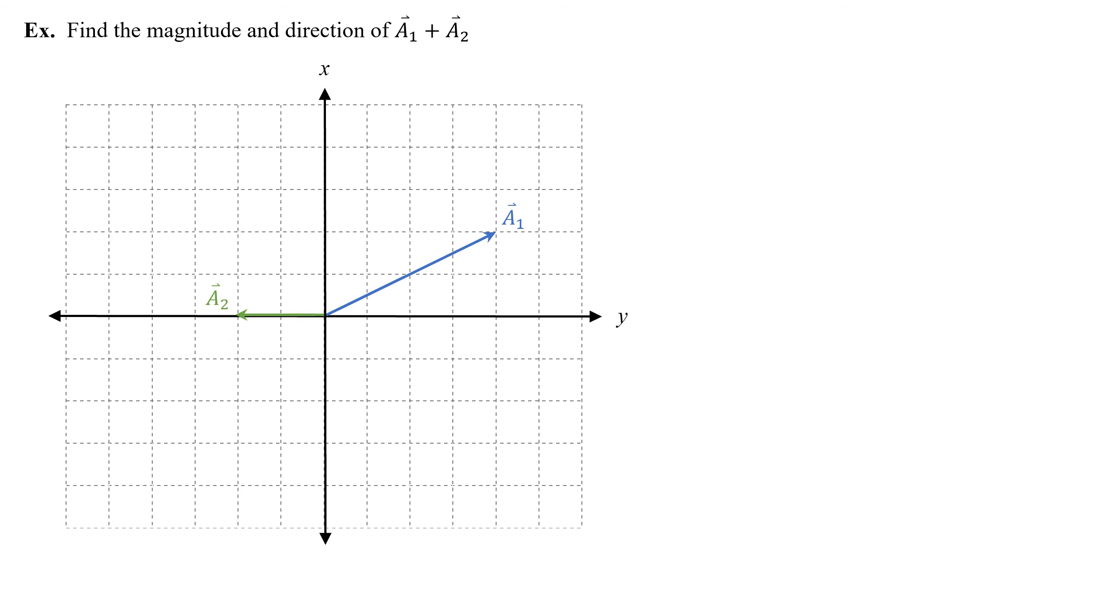Let's do an example. Find the magnitude and direction of a1 plus a2. So since this is nicely drawn on a graph for me, I'm just going to go ahead and do the head-to-tail method. I can take a2, and I can draw it with the tail starting at the head of a1. So that would look like this. So now I know that the sum of these two vectors, which we can call the resultant or the vector sum, starts at the tail of a and points right there.